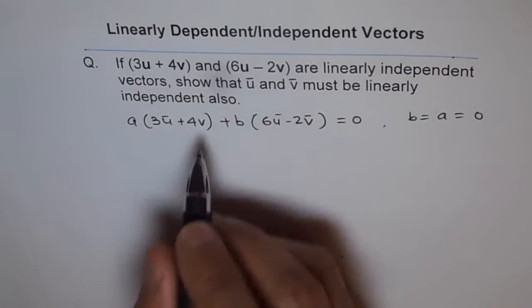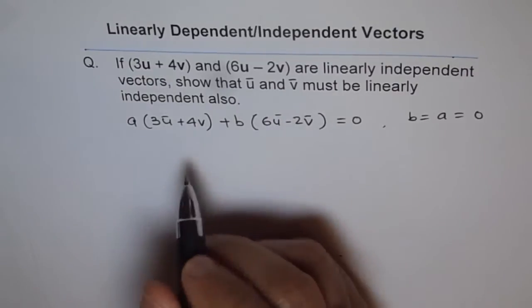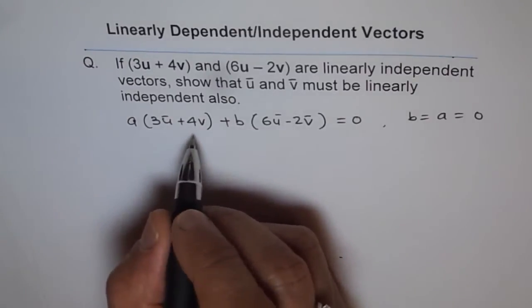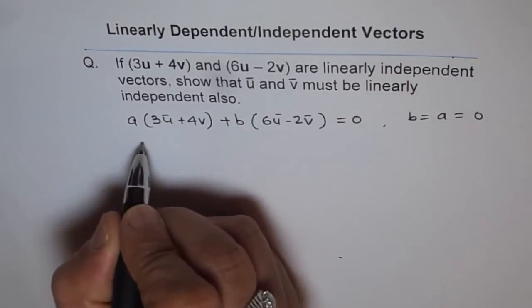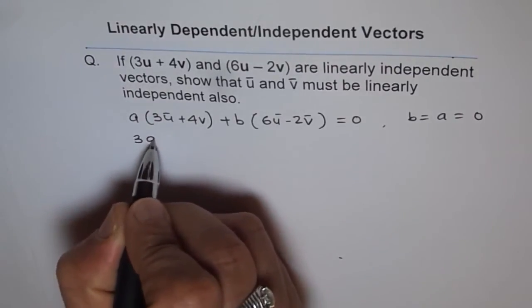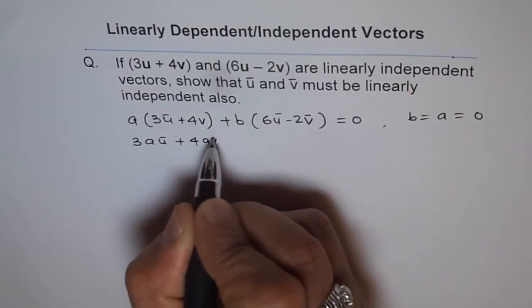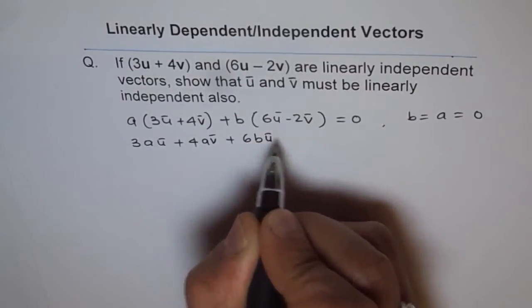So now let's try to solve it. We will combine u's and v's and then see what we get. Let's rearrange it, so we have 3au + 4av + 6bu - 2bv = 0.